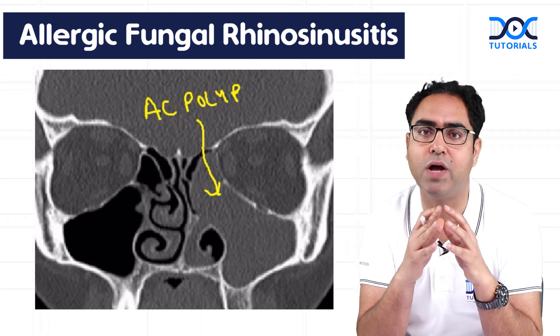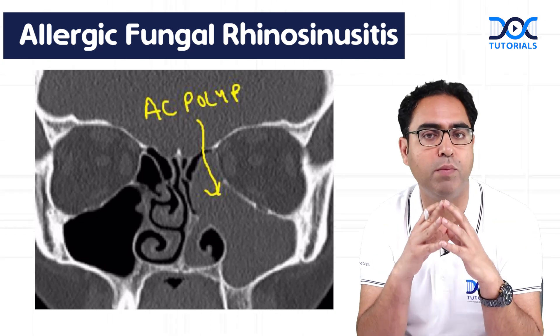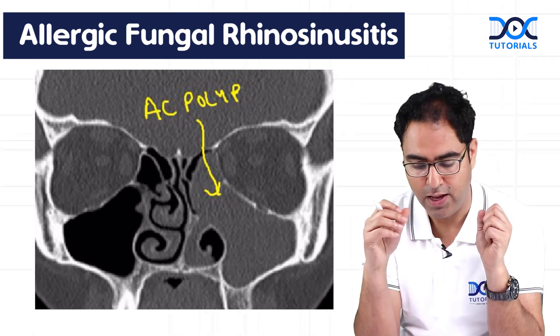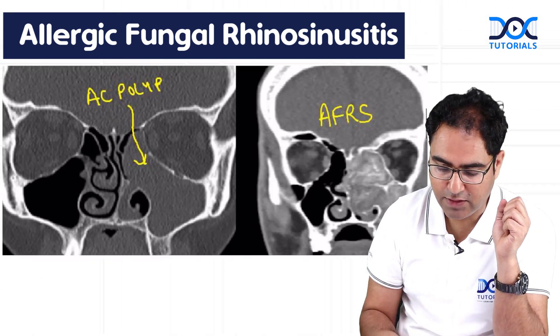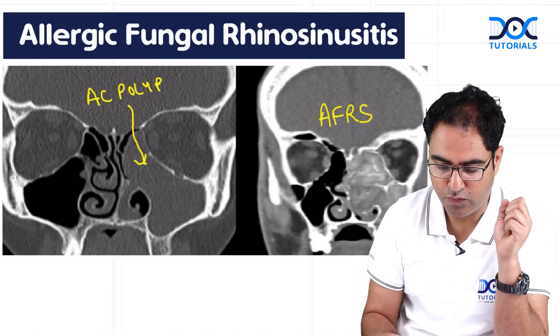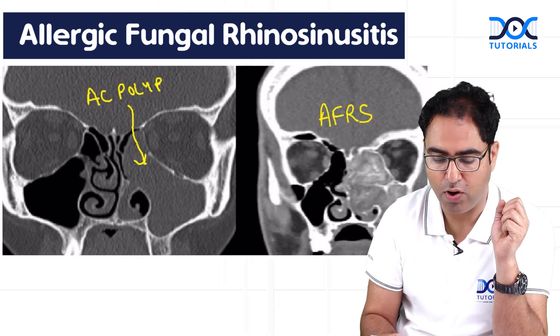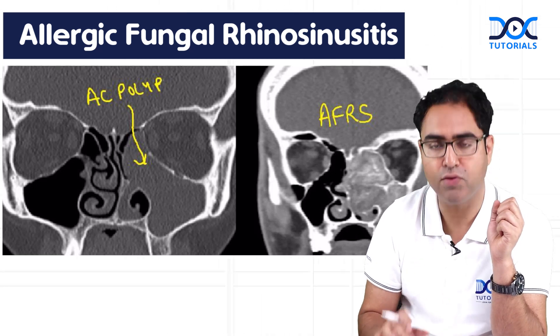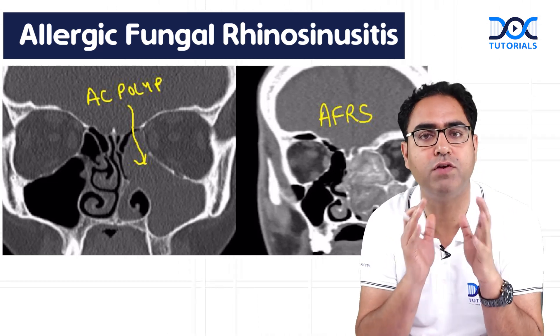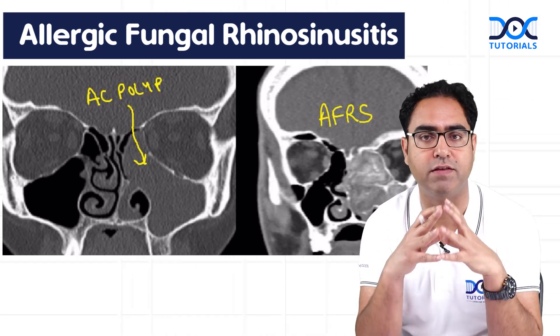are nothing but inflamed edematous mucosa. So they look isodense or homogeneous in appearance on CT scan. Now let us compare this with the polyp of allergic fungal rhinosinusitis — the AFRS.